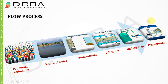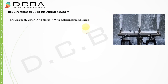The first requirement is that it should supply water to all places with sufficient pressure. This is a very common requirement — water should reach all places, no place should be devoid of water supply. Sufficient pressure head should also be maintained so that water coming to your house can be easily stored in tanks, generally on the terrace.